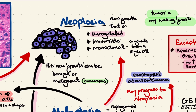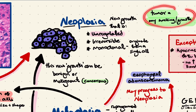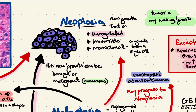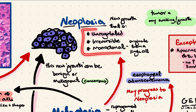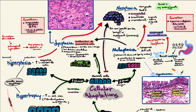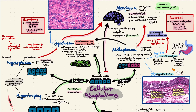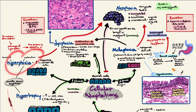All neoplasms are tumors, but not all tumors are neoplasms — for a tumor to be a neoplasm, it needs to have the three properties of being unregulated, irreversible, and monoclonal. Neoplasia can originate from dysplasia, metaplasia, hyperplasia, or directly from normal cells.